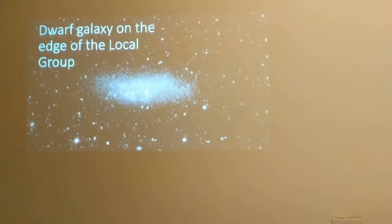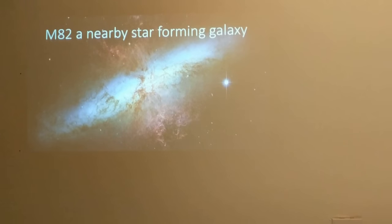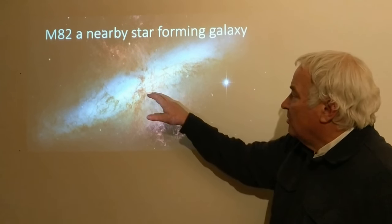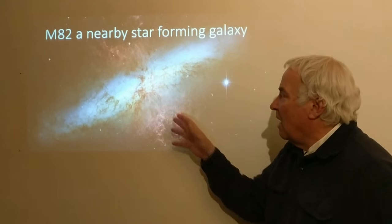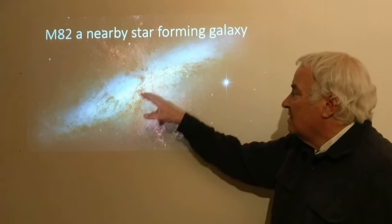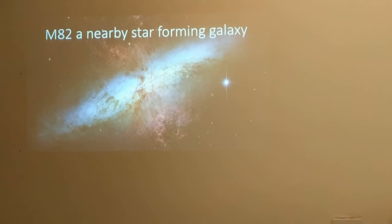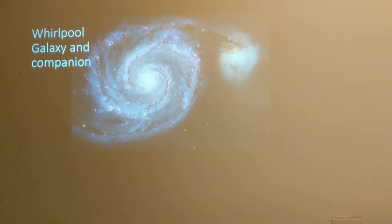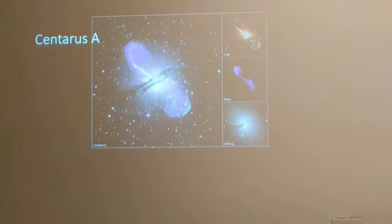Moving out beyond the local group, there are quite a number of other groups of galaxies and interesting objects. This is M82, a starburst galaxy — stars are being formed in its disk and central area at rates much higher than in our own Milky Way, giving it a very violent appearance. The Whirlpool galaxy also has a smaller dwarf companion connected by a tidal tail, and it is also fairly nearby.